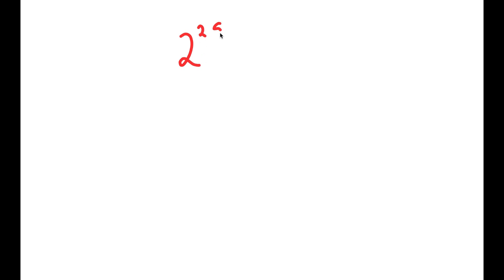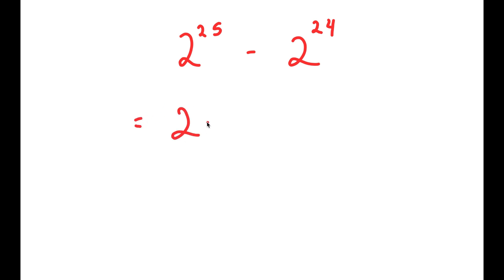In this video I'm going to solve the problem 2 to the power of 25 minus 2 to the power of 24. To solve this I'm going to first start by rewriting 2 to the power of 25 as 2 to the power of 24 plus 1, so I have this minus 2 to the power of 24.